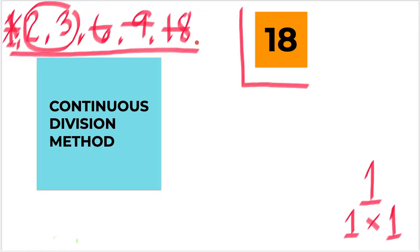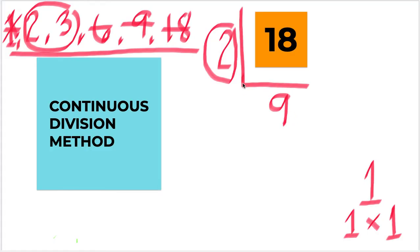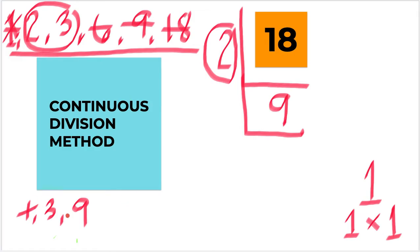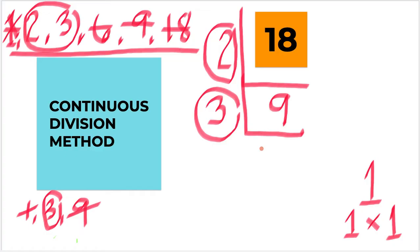You can use either 2 or 3. I will be using 2. So 18 divided by 2 gives me 9. I will encircle 2 because it is already a prime. Now 9 is not a prime number, so we need to continue the process and find prime factors that can divide 9. The numbers that can divide 9 are 1, 3, and 9. Since 1 is not prime and 9 is not prime, we will use 3. So 9 divided by 3 gives you 3. Since 3 is already a prime, we stop the process.